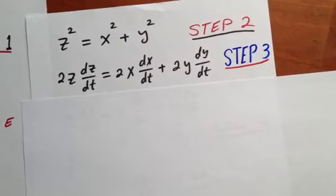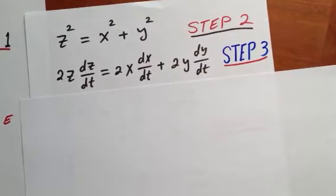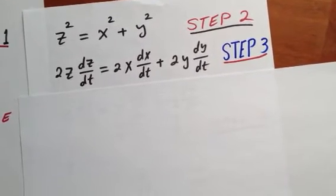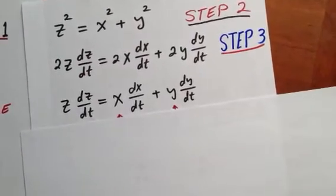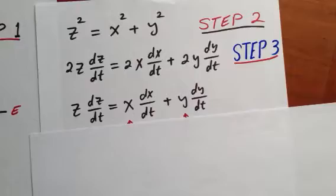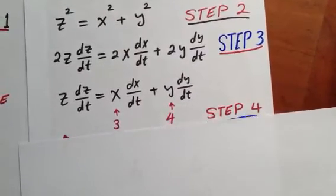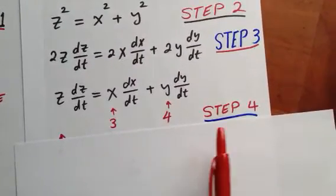We plug in 3 and 4 for x and y. But before we do that, we can divide everything by 2 to simplify. Now plug in 3 and 4. This is the beginning of step 4.